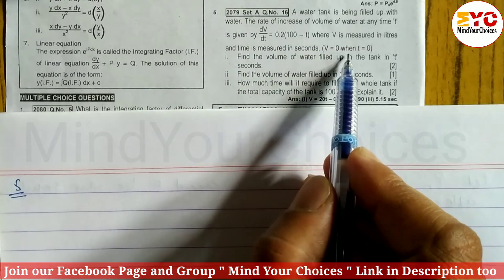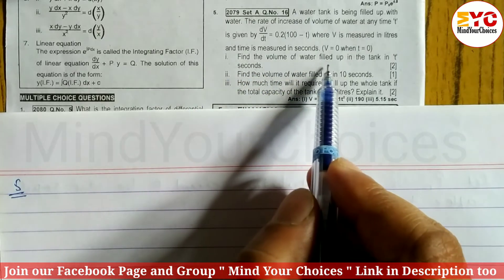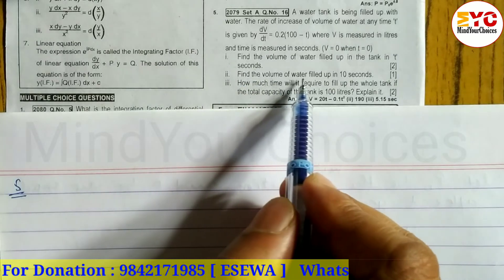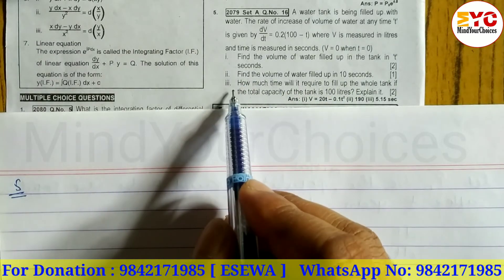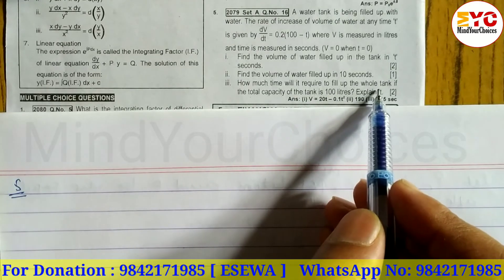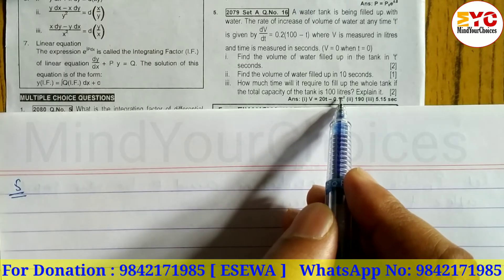V equals 0 when T equals 0. Number 1: Find the volume of water filled up in the tank at T seconds. Number 2: Find the volume of water up to 10 seconds. Number 3: How much time will be required to fill the whole tank if the total capacity of the tank is 100 liters?